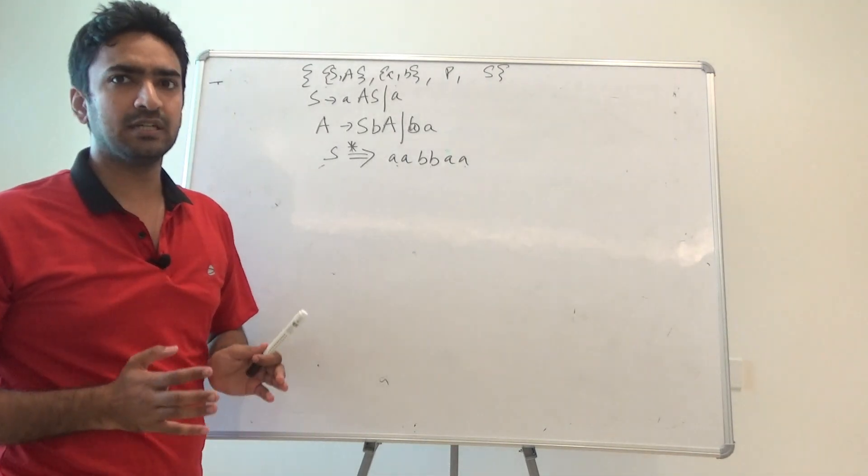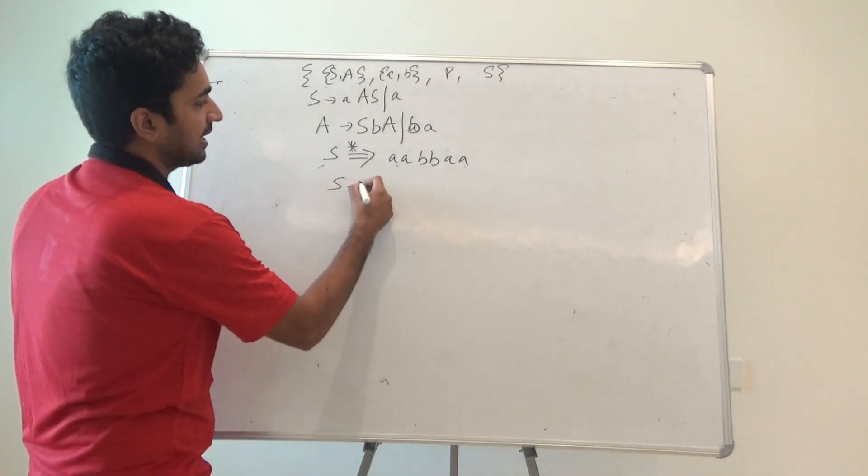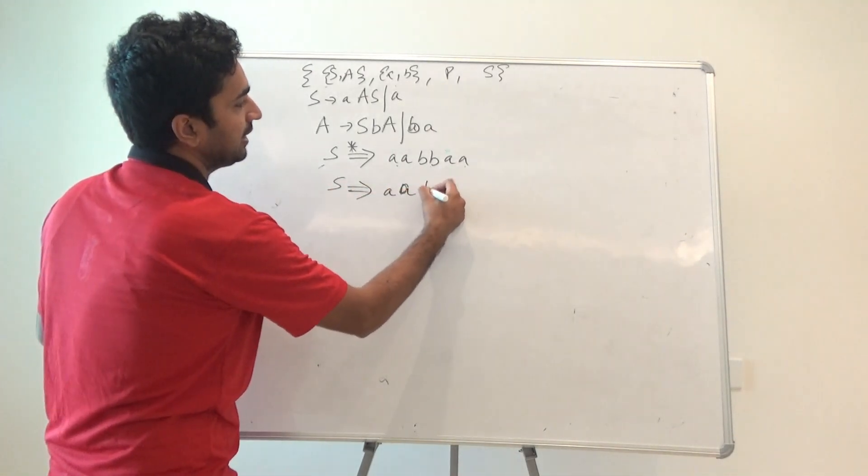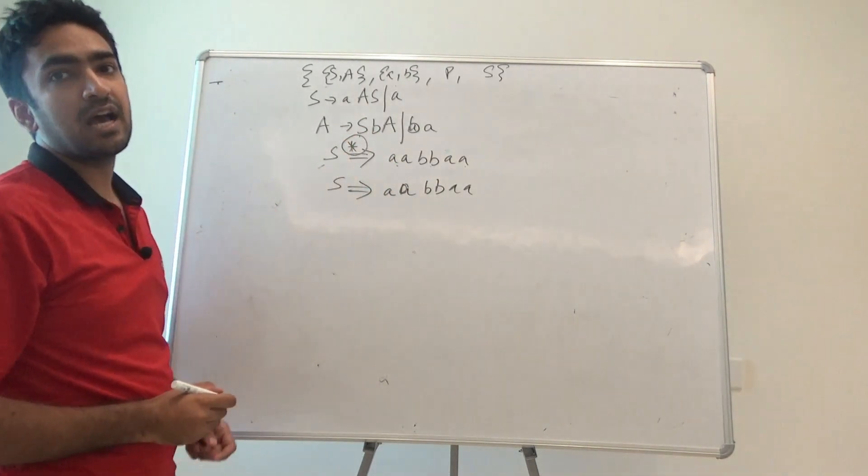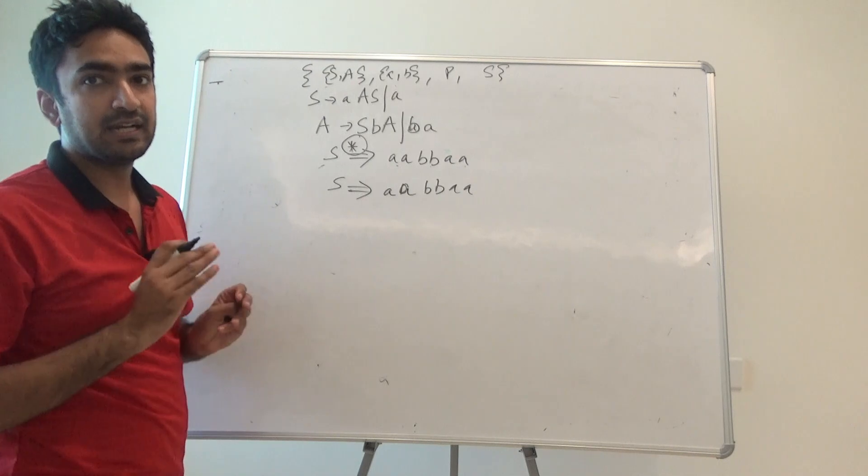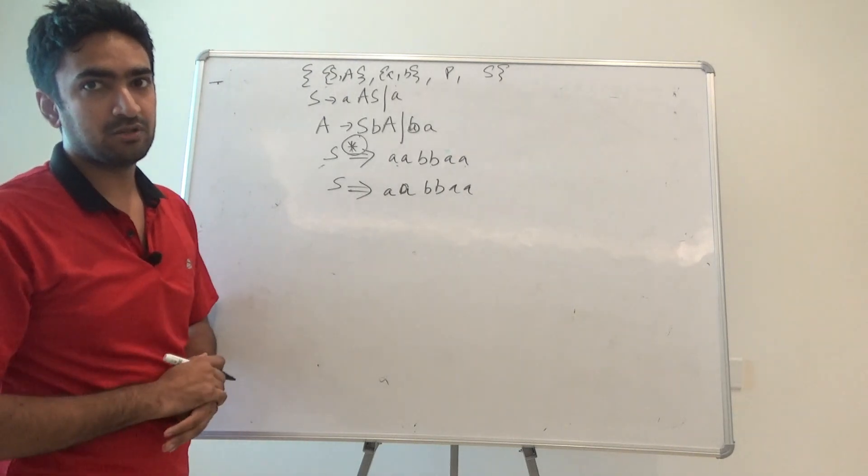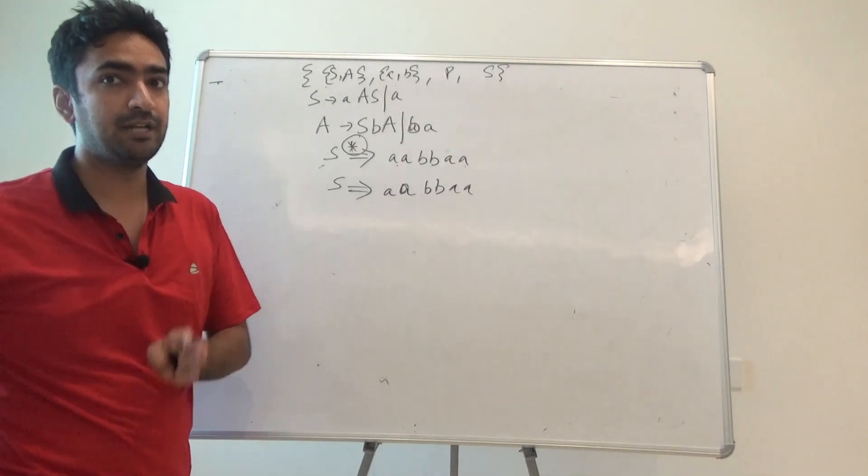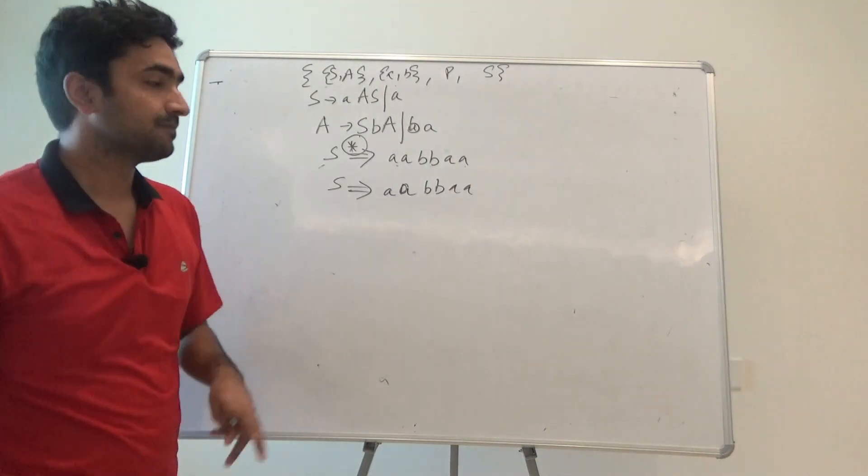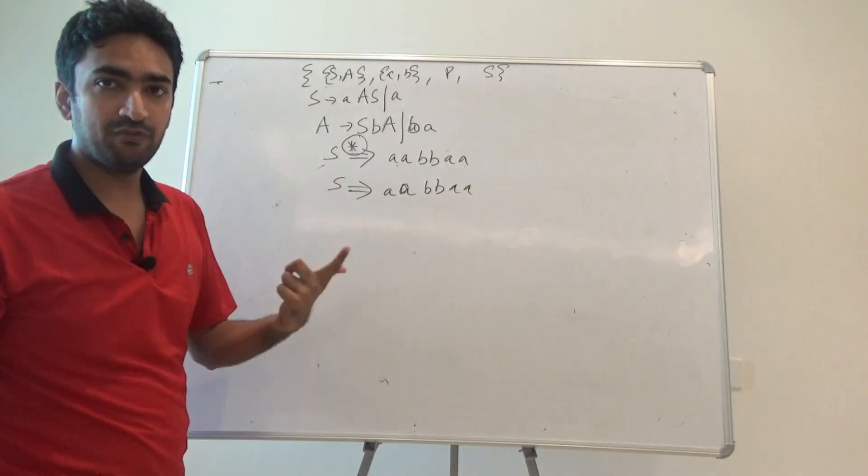If it is actually solved in one step, then that means you can directly write it as S is generating aabbaa. But this star actually suggests us that there are a number of steps that will be taken to basically make sure that S is generating aabbaa from a variety of steps.